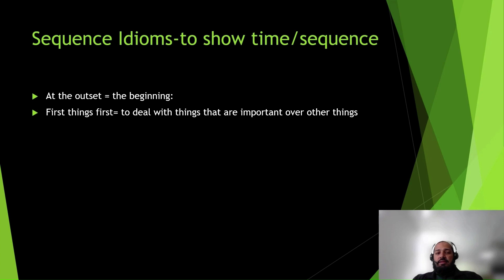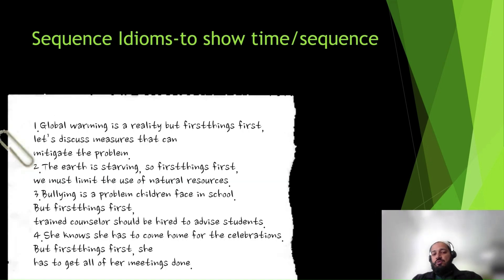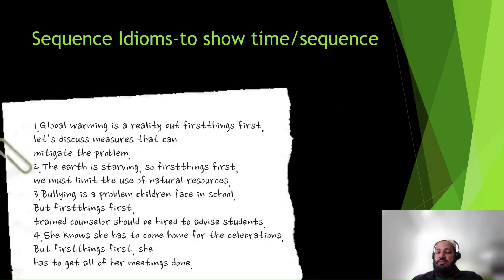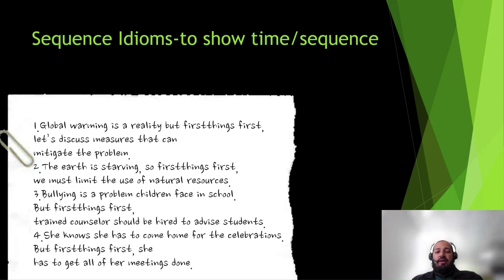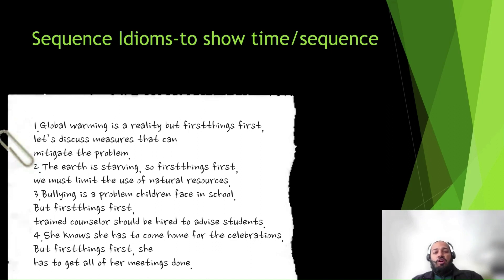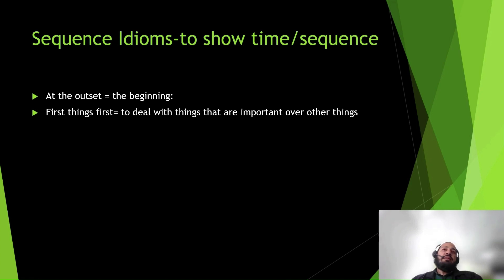Now let's check the second one — 'first things first.' First things first means to deal with things that are important over other things. An example: 'The earth is starving, so first things first, we must limit the use of natural resources.' Another: 'Bullying is a problem children face in school, but first things first, trained counselors should be hired to advise students.' Also: 'Global warming is a reality, but first things first, let's discuss the measures that can be used to mitigate the problem.'